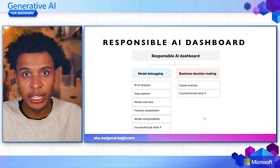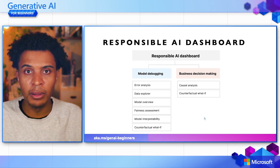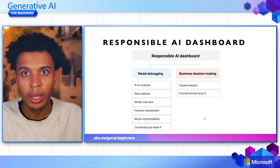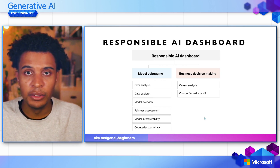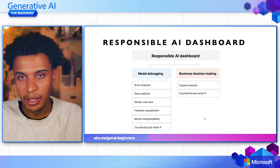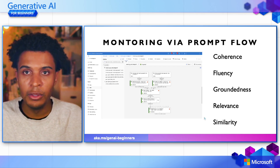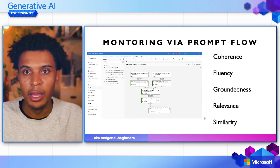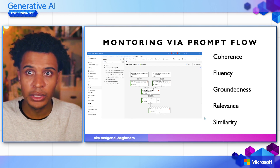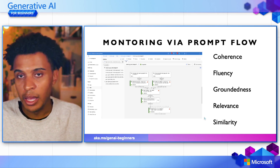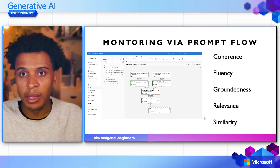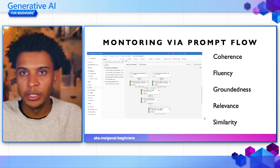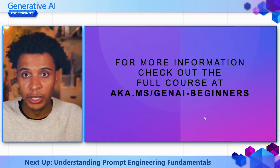We also have the Responsible AI Dashboard, which allows us to keep score on how the model is responding and being interacted with by users, giving you a good overview of how the model performs over time — not only when you first deliver the generative AI application to production, but the sixth time, the tenth time, or the hundredth time. And then lastly, we can do great things with monitoring via PromptFlow. PromptFlow is an open-source tool we can use to understand the type of responses being delivered to users. We have metrics around this — whether it's coherence, fluency, groundedness, relevance to the actual prompt, and similarity to other prompts we've seen before — all great ways to give you oversight and put those Responsible AI principles into practice.